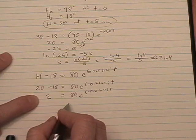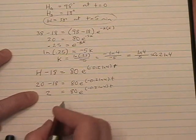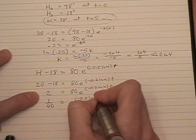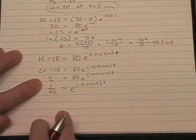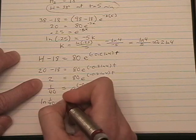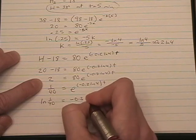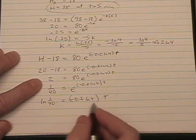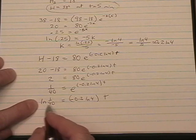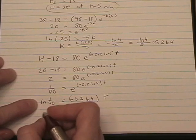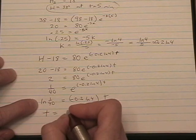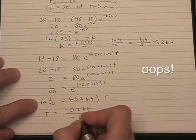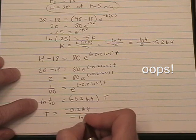We get a 2 over here. Divide by 80 and we get 1 over 40. Natural log of both sides. We get the natural log of 1 over 40 equals negative 0.2 natural log of 4 times t. And we're going to divide by this. I'm going to do my trick where I make this negative log of 40.